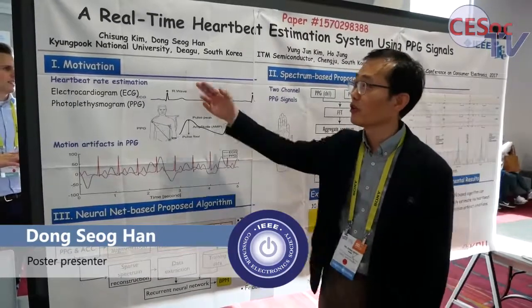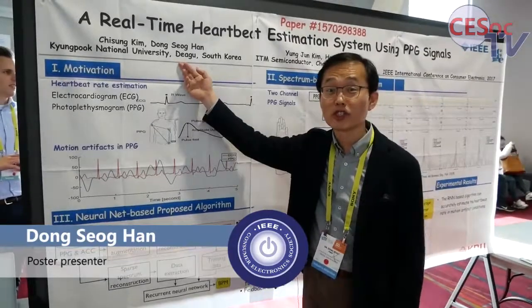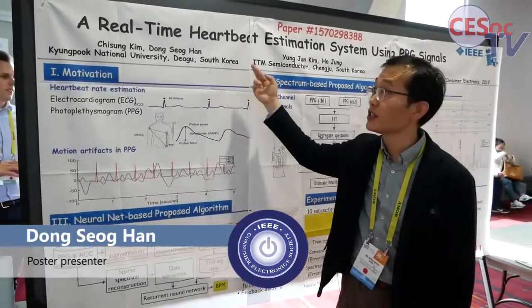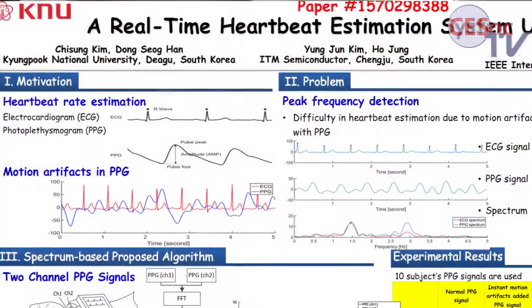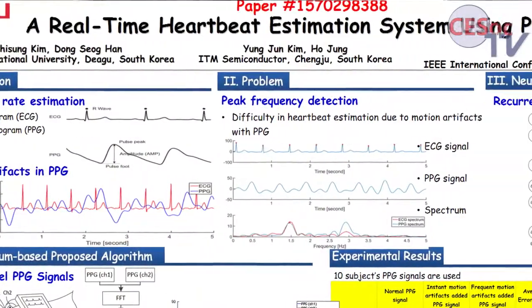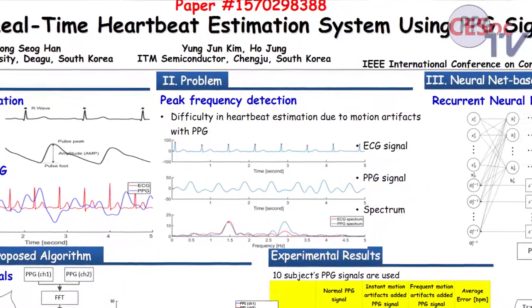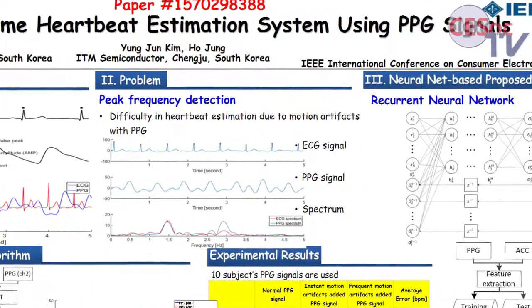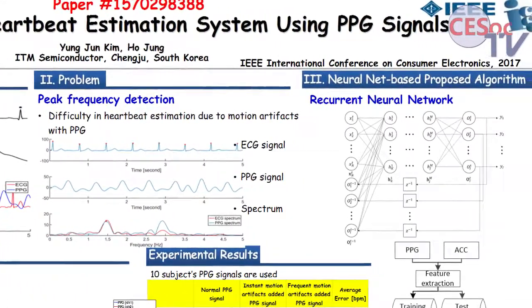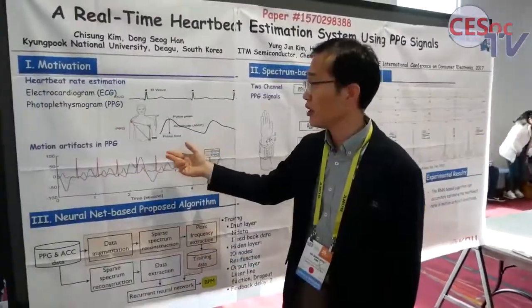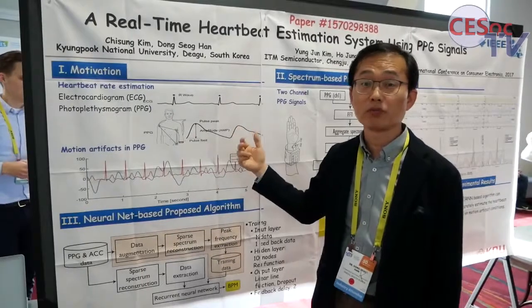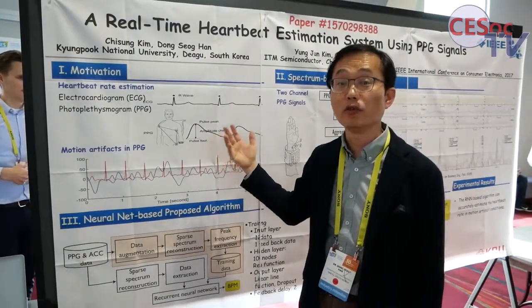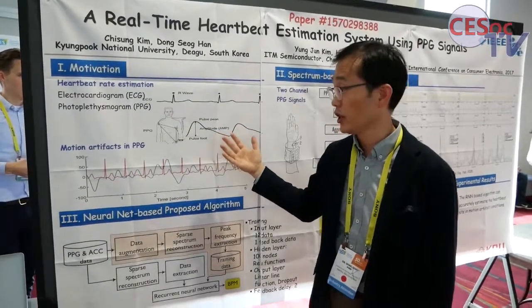Hi, I'm Dong Han from Gyeongbuk National University. This is a real-time heartbeat estimation system using PPG signals. My goal is to detect the correct heartbeat rate in real time.